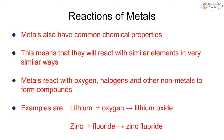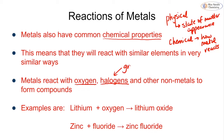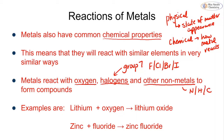As well as physical properties, metals also have common chemical properties. It's important to understand the difference: physical properties relate to things like state of matter or appearance, whereas chemical properties are about how a metal reacts with other elements. Because metals have similar chemical properties, they react with similar elements in similar ways. For example, metals will all react with oxygen, with halogens from group seven — fluorine, chlorine, bromine, and iodine — and they can also react with other non-metals such as nitrogen, hydrogen, or carbon, forming compounds.